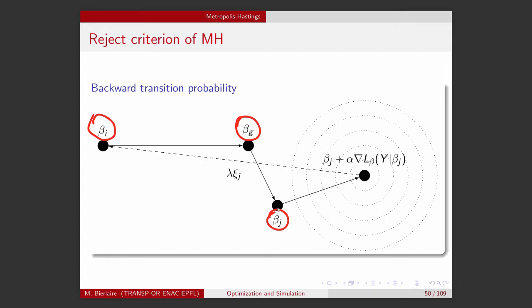Well, the first thing is deterministic. I calculate the gradient, and I move along the gradient with a step alpha. So this is the point that is generated deterministically. This is beta_j plus alpha times the gradient, calculated at beta_j.